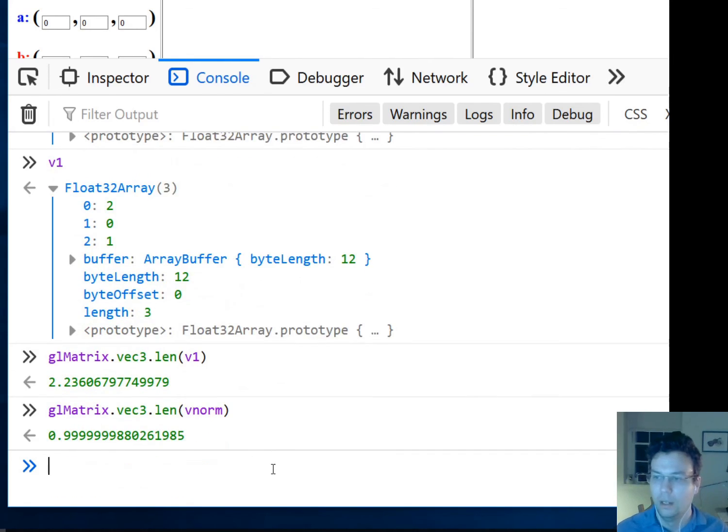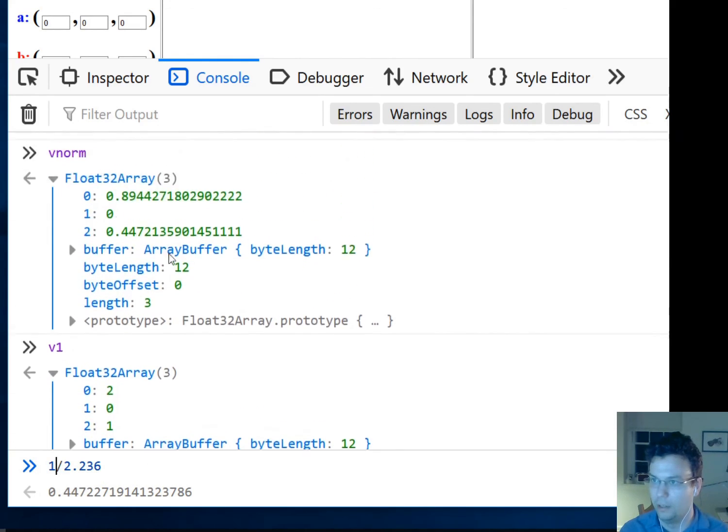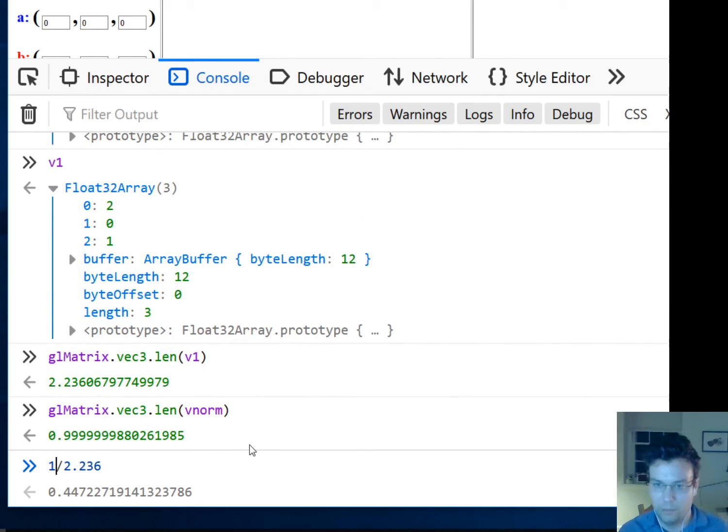The way you normalize a vector is you divide each component by the length. That will give you—2 over 2.236 is that 0.89, that's where that comes from, 0.894. And then 1 over 2.236 is the 0.447. That's how you normalize. But again, the GLMatrix library does this for you. We'll work on this a little more in class. I'll just have you do one real quick exercise in the browser to make sure that you're able to use this library.